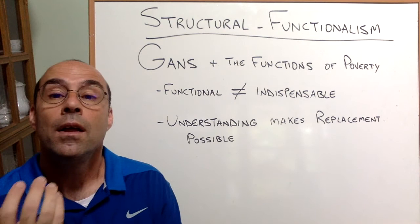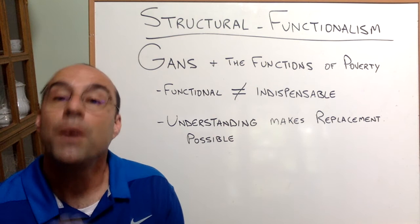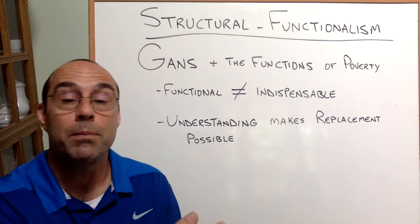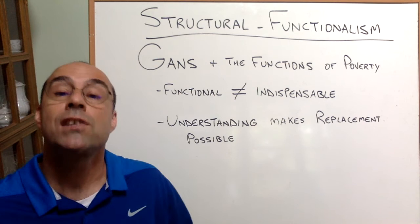These, at least the three that I've talked about, these functions for the people who are not impoverished, those functions have to get met. Those people who run payday loans, they need jobs. Right now they have them because of poverty. If we get rid of poverty, they're still going to need jobs. Those people who are running prisons, they're still going to need jobs.